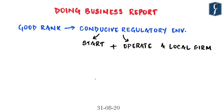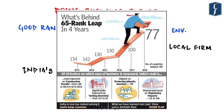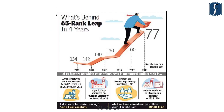India has successfully improved its position from 142nd rank in 2014 to 63rd in 2020. The Government of India has set a target of bringing India within the top 50 rankings in the Doing Business Index. India's score improved from 67 to 71 in 2020.